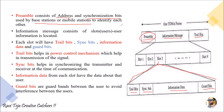The information message consists of different time slots assigned to users. Each slot represents one user — slot one, slot two, slot three, up to slot N. Each slot in turn consists of: trail bits, sync bits (synchronization bits), information data, and guard bits.